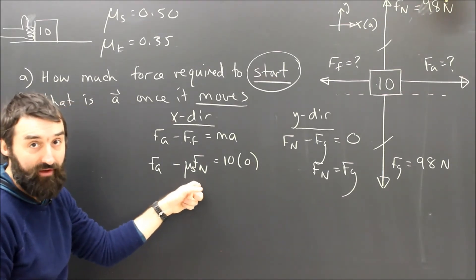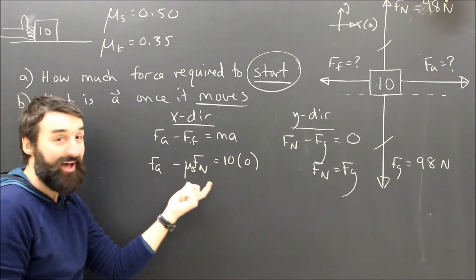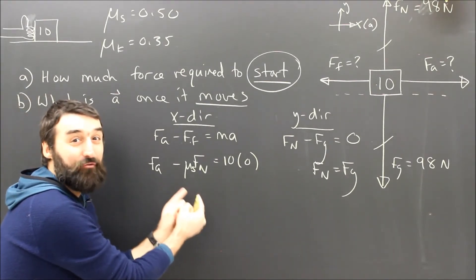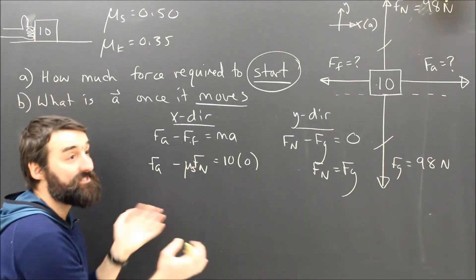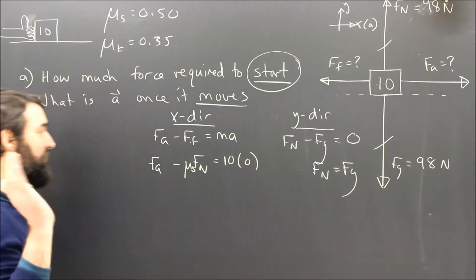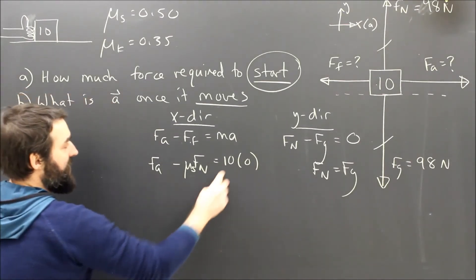And if I put in μ Fn for static, remember, I'm automatically putting in the maximum, because that's not the formula for static friction. It's the formula for the max static friction. So I've already said the maximum friction I could apply, and that's just enough to get it to go. So I don't have to do anything more complicated than that.